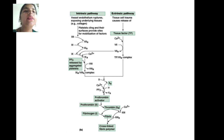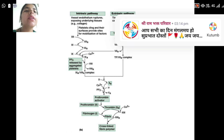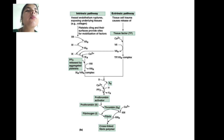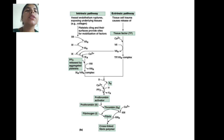We can see in the diagram examples of the coagulation cascade. Platelets adhere and their surface provides sites for the mobilization of clotting factors. In the extrinsic pathway, tissue cell trauma causes release of the tissue factor (TF).